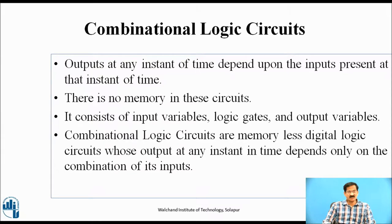Now let us see what a combinational logic circuit is. The outputs at any instant of time depend upon the inputs present at that instant of time. It means that a combinational logic circuit is a digital circuit where the output will be present only when the inputs are present. There is no memory in this circuit. It consists of input variables, logic gates, and output variables — simply termed as input data and output data. Combinational logic circuits are memory-less digital logic circuits whose output at any instant in time depends only on the combination of its inputs.